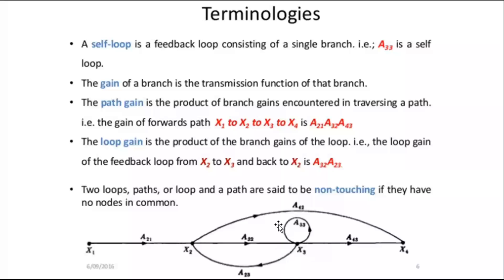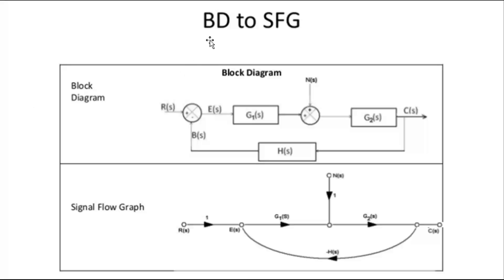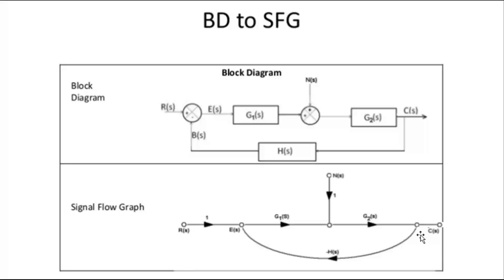Now let's see how to convert a block diagram into a signal flow graph. The block diagram consists of R(s) as the input, C(s) as the output, two summing points, another input N(s), and blocks G1(s), G2(s), and H(s) with corresponding gains marked. In the first step, input node, output node, summing points, and takeoff points are all assigned as nodes.